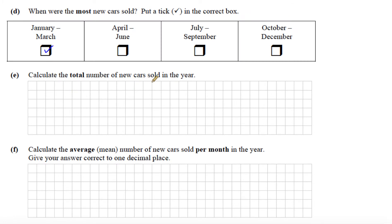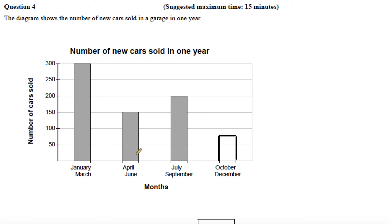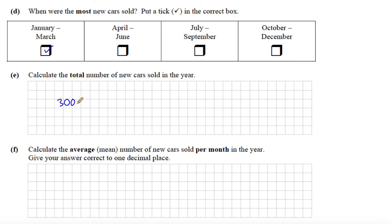Calculate the total number of cars sold in the year. Well, the first bar was 300. And if we go back, April to June was 150, July to September 200, and October to December 75. So we're just going to add those to the 300. So 300 plus 150 plus 200 plus the 75, and that gives us a total of 725.